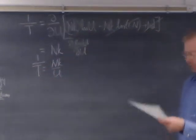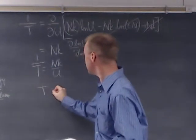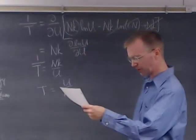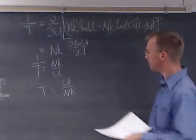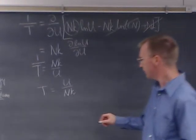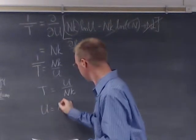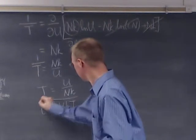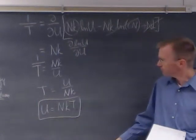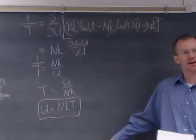So one over T equals Nk over U, which means T equals U over Nk. Solving for energy gives us U equals NkT for an Einstein solid.